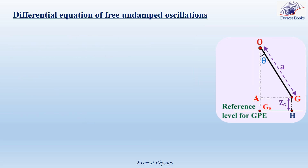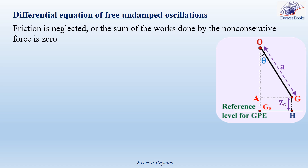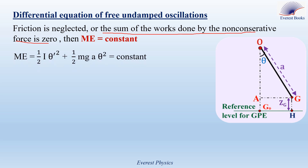Let's determine the differential equation governing the undamped oscillations of the compound pendulum. The oscillations are undamped if friction is neglected. In this case, the mechanical energy of the pendulum-Earth system is conserved — equivalently, the sum of the work done by non-conservative forces is zero, and therefore the mechanical energy is conserved. We have ME equals one-half I theta-prime squared plus one-half MgA theta-squared, which equals a constant.